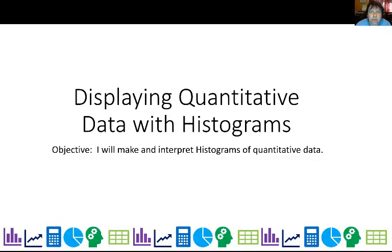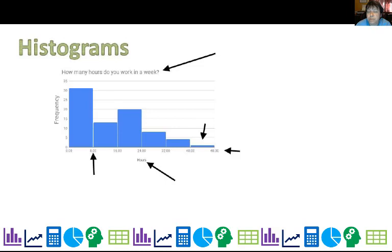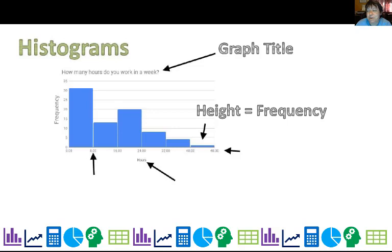One of the most common ways of displaying quantitative data is a histogram. So here are the parts of a histogram. You have the graph title, the height is the frequency, should look a lot like a bar graph.